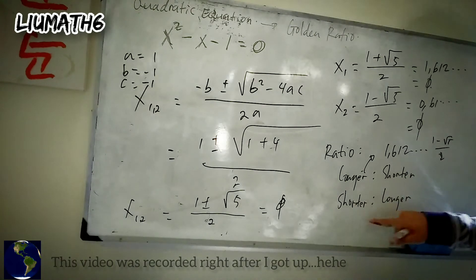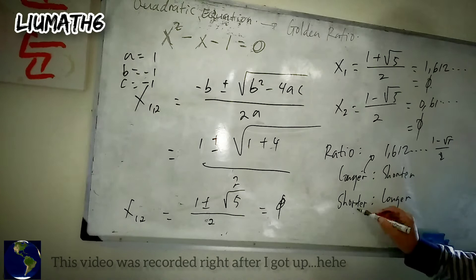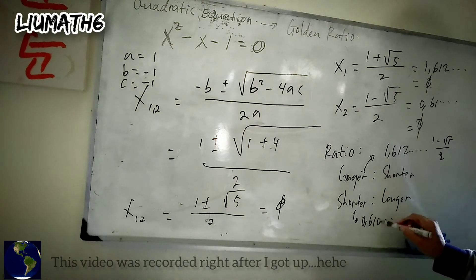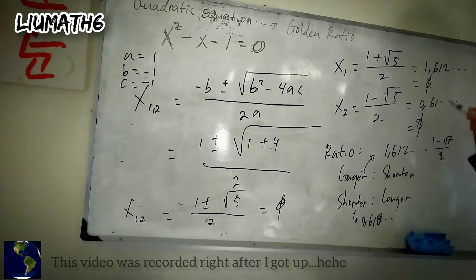So that means the golden ratio for the shorter to the longer is going to be 0.61... like this. So both of these are the value for golden ratio.